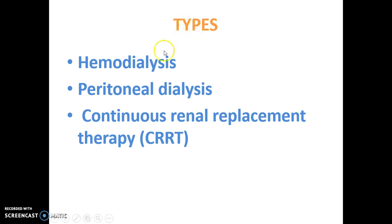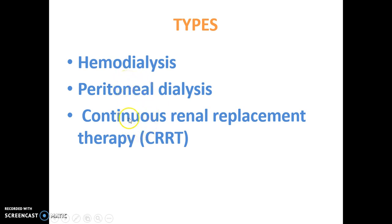There are mainly three types of dialysis. The first one is hemodialysis, then peritoneal dialysis, and then continuous renal replacement therapy — CRRT. So these are the three types of dialysis.